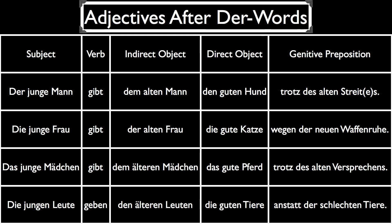In this sentence we again have two adjectives that take an E while the dative and genitive case take EN. Our last example only uses plural nouns: Die jungen Leute geben den älteren Leuten die guten Tiere anstatt der schlechten Tiere — The young people give the older people the good animals instead of the bad animals. Notice that in this sentence all of the adjectives end in EN because all plural adjectives after der words take an EN for the adjective ending.